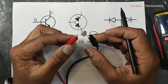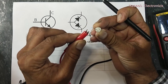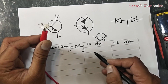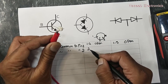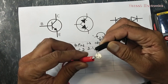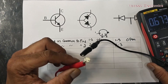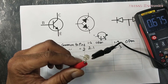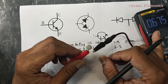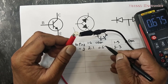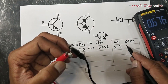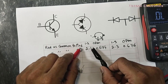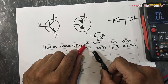Now move the red lead to pin number 2 — red lead as common to pin number 2. We will take readings between 2 and 1, and 2 and 3. It is 0.674... 0.673... 0.674... 0.675... 0.676... 0.674... 0.676 volts.